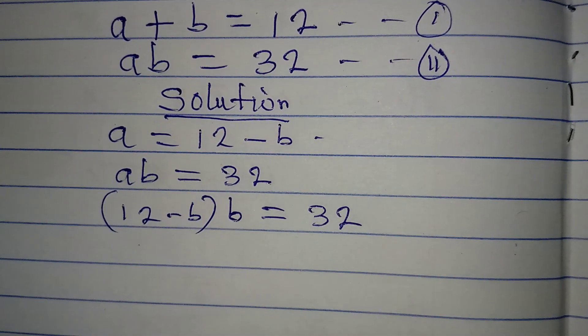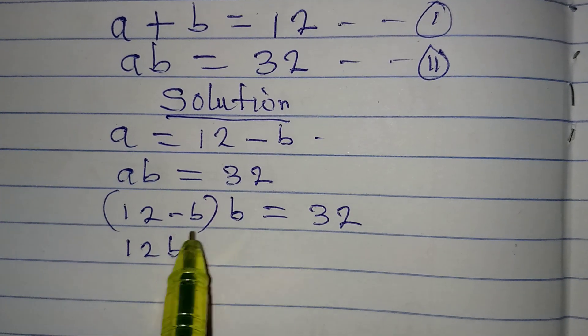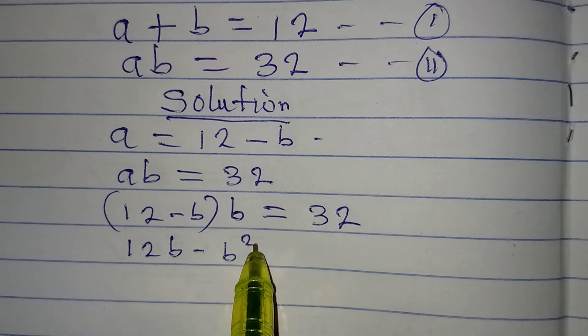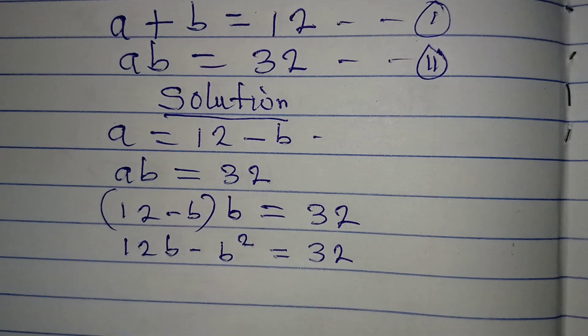Now the next thing is to open this bracket. So we have 12B minus B squared equals 32. Now let us rearrange this.